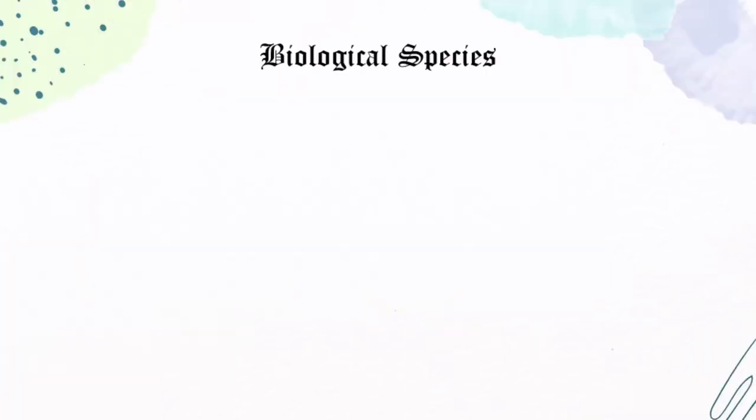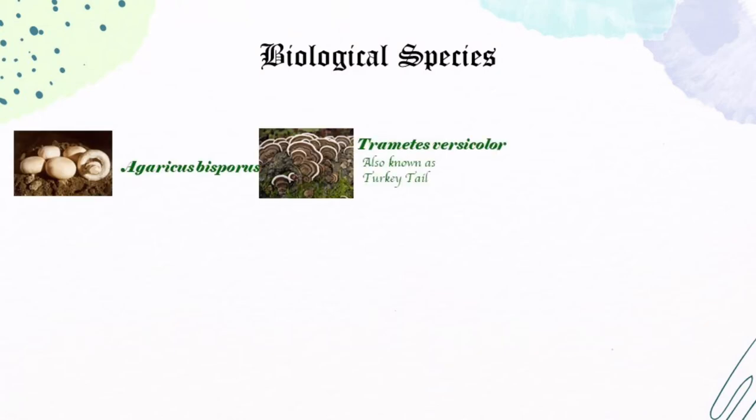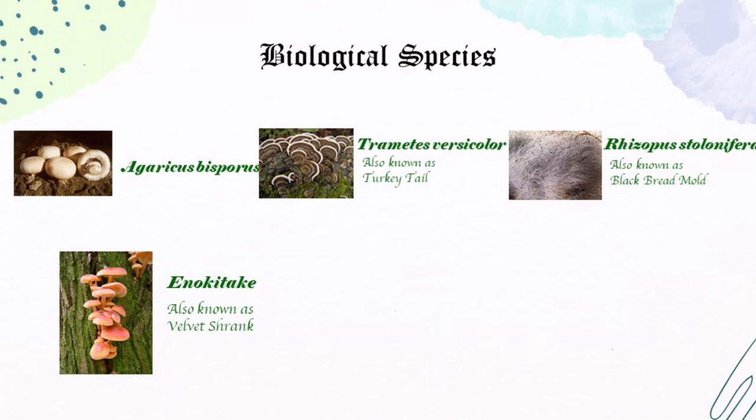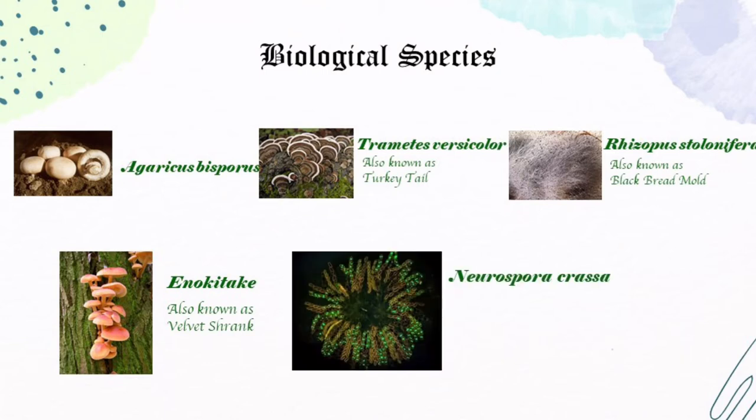Biological species. Agaricus bisporus. Trametes versicolor, also known as turkey tail. Rhizopus stolonifera, also known as black bread mold. Enokitake, also known as velvet shank. Neurospora crassa.